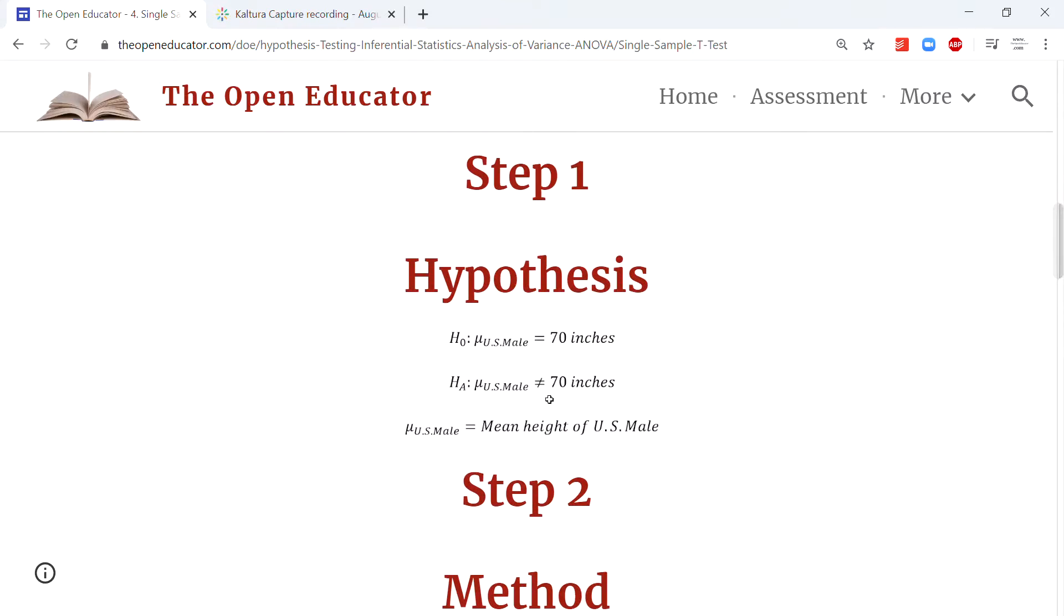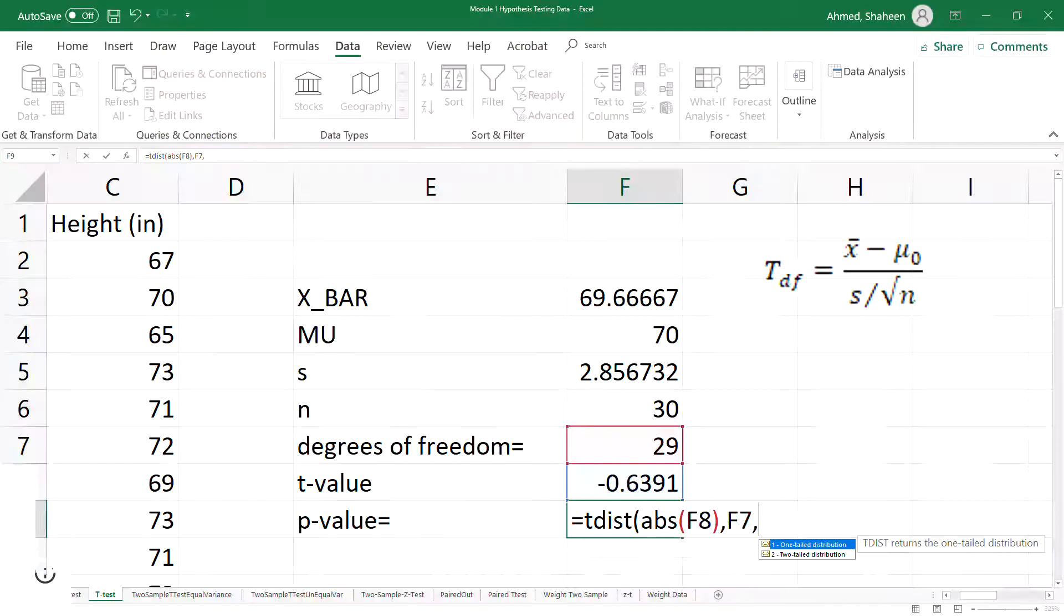That means it can go to the left side or right side, both sides, so it's a two-tail test. We select 2 for that, close the parenthesis, done. That's the p-value. Now to calculate the same p-value in Minitab, I copied the data already.